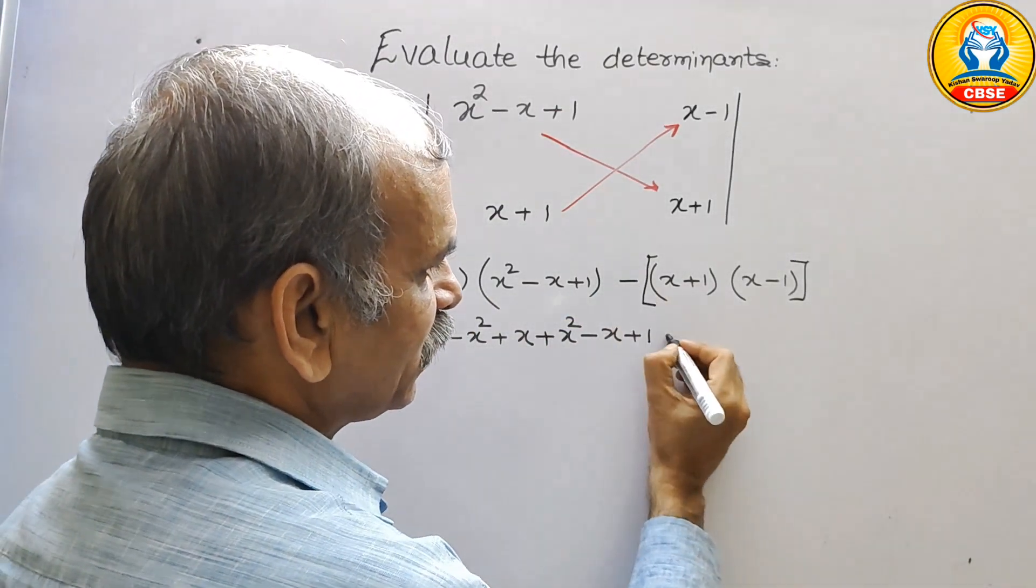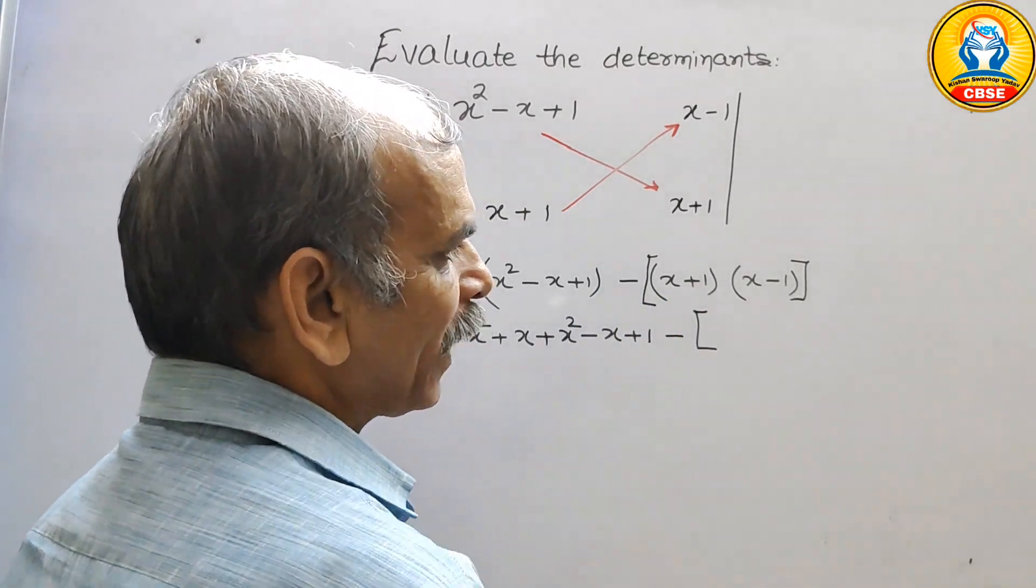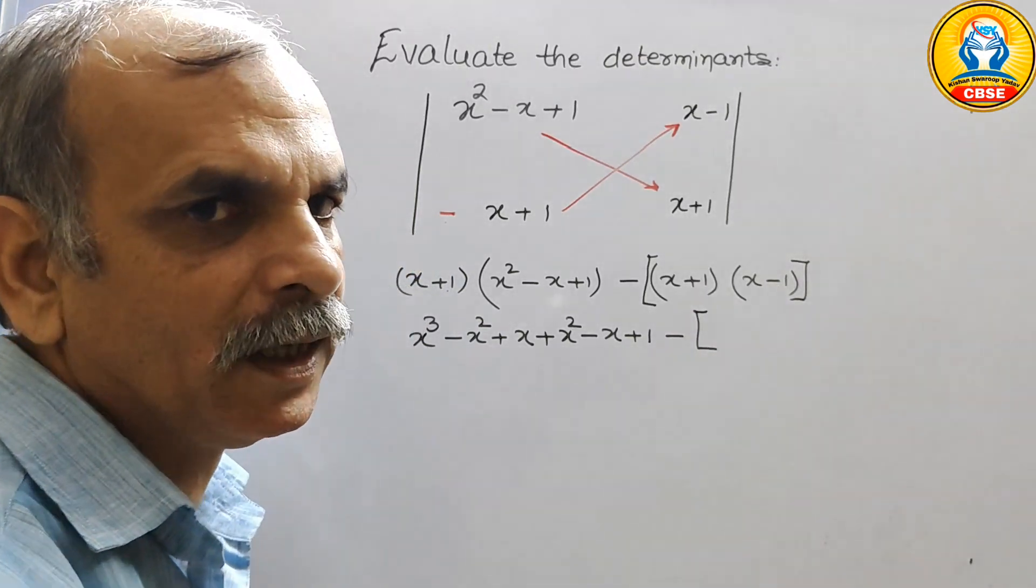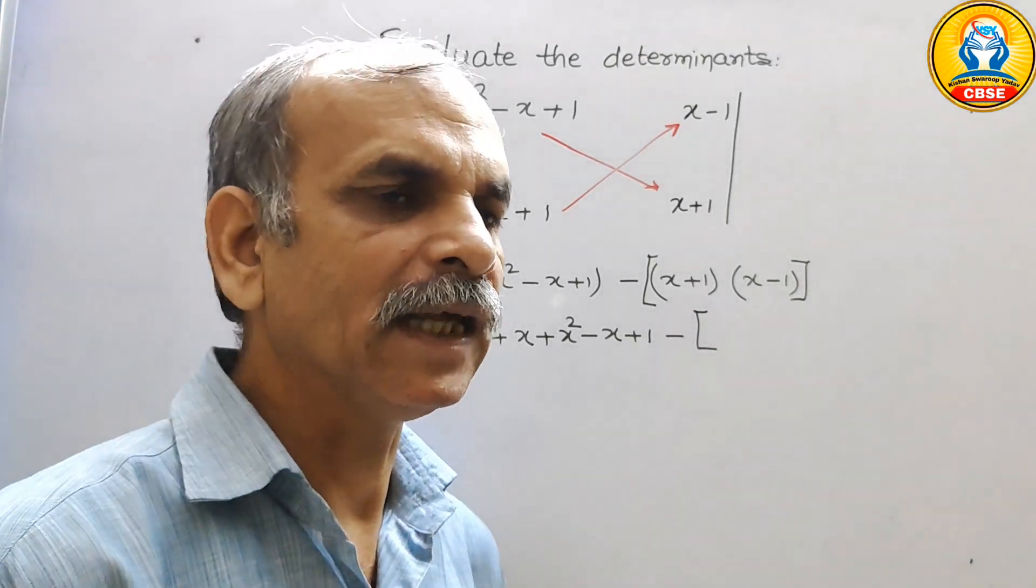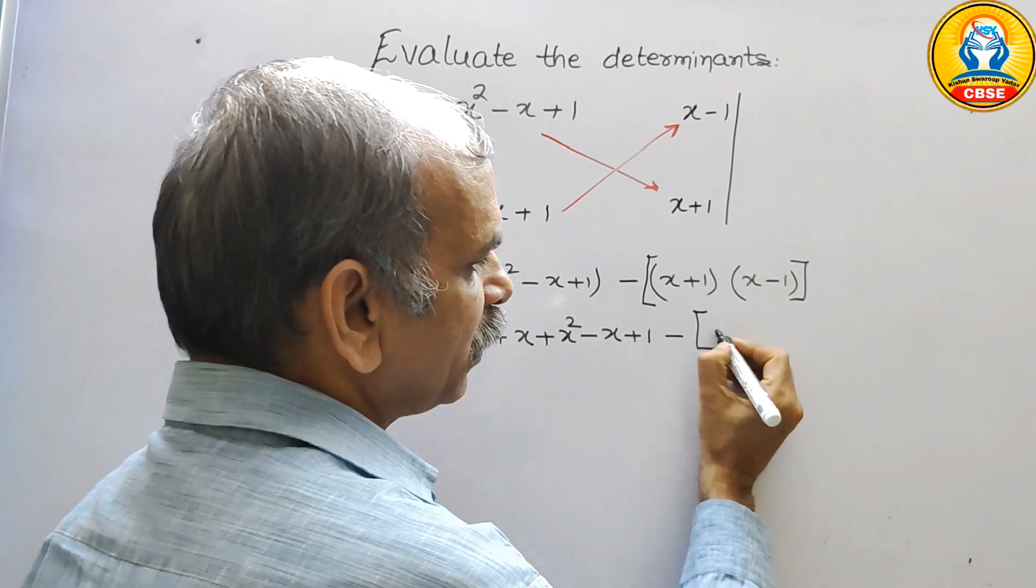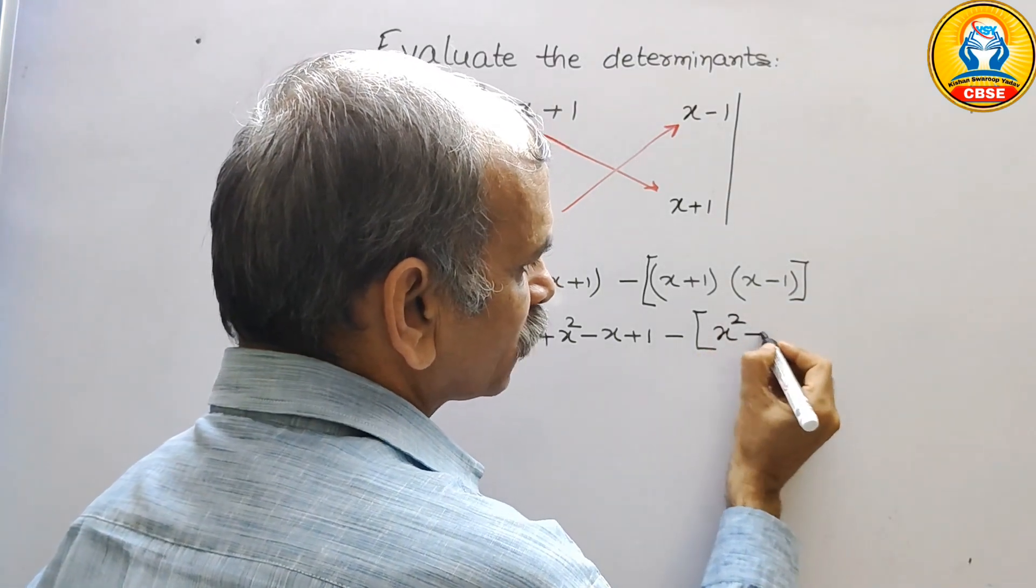Now we will put minus sign and a bracket. So x plus 1, x minus 1. a plus b, a minus b. That is equal to a square minus b square. So here we will write x square minus 1.